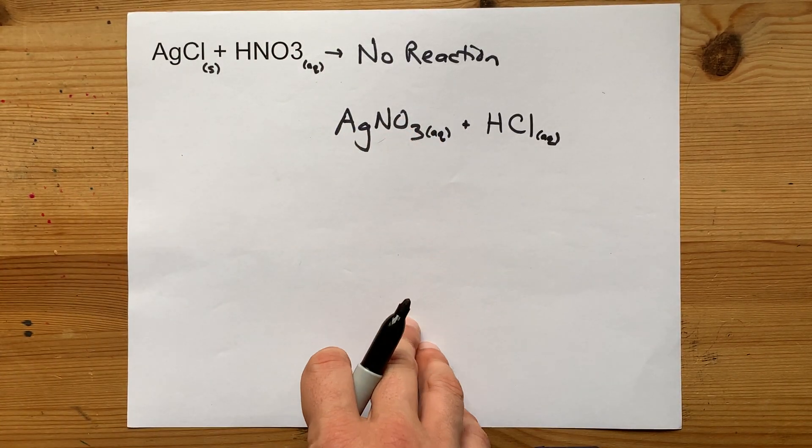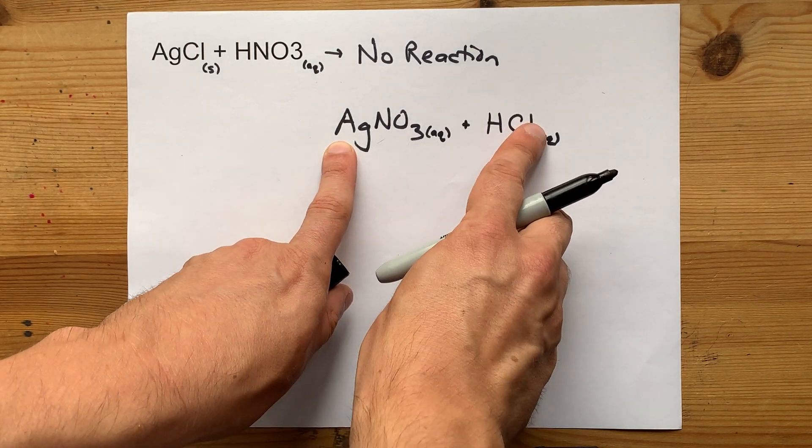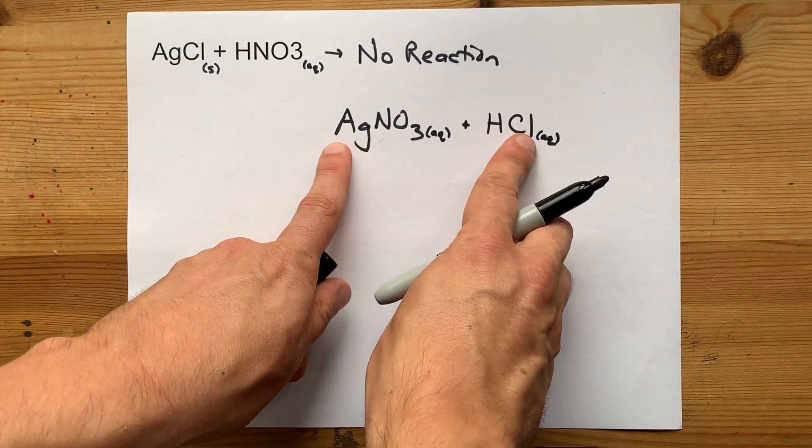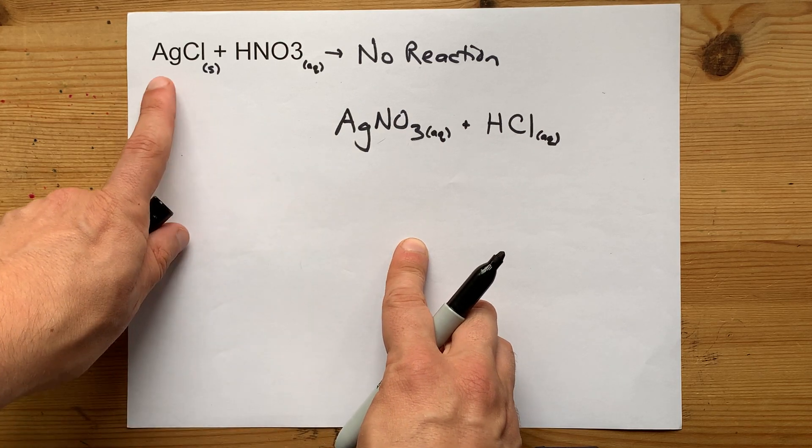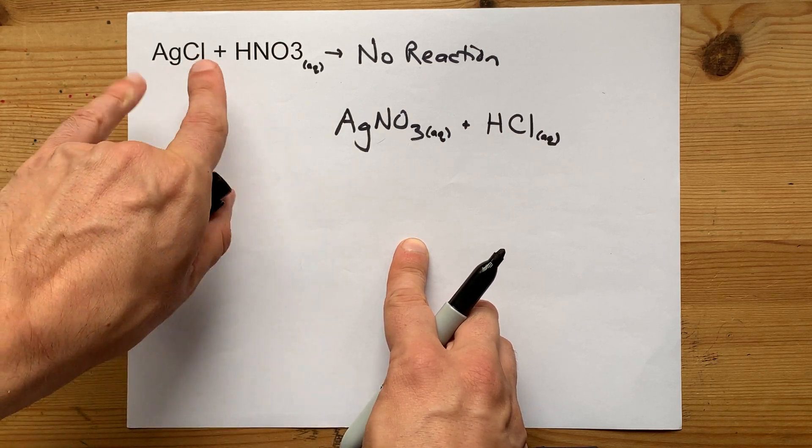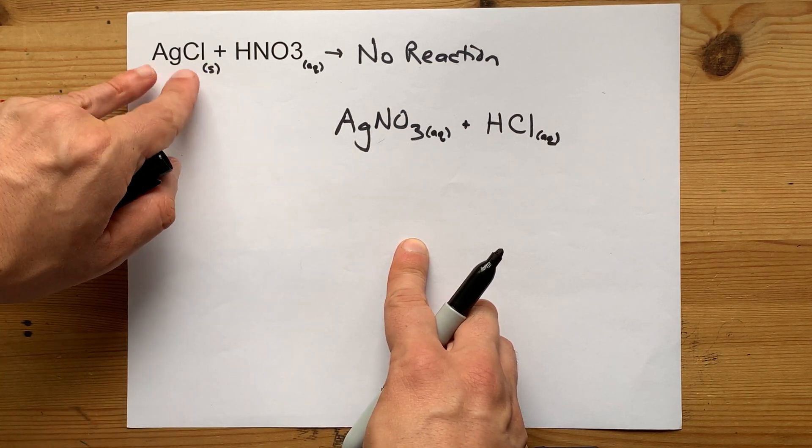That's what AQ means. And the silver ions and the chloride ions from these pairs will combine together because silver and chloride are insoluble together as a pair.